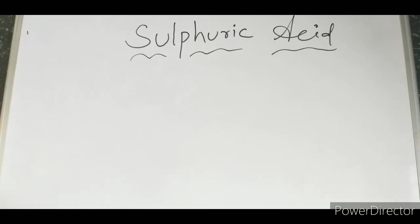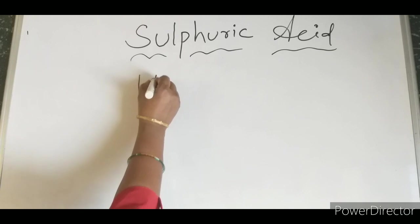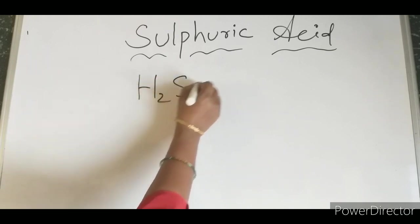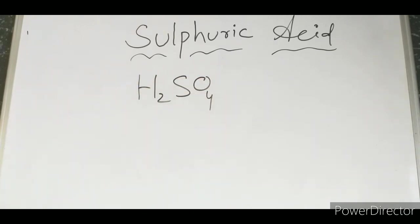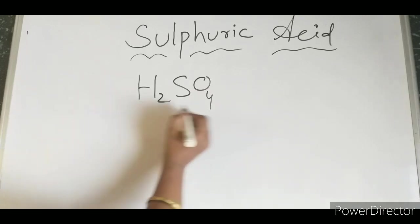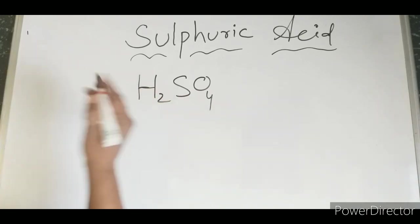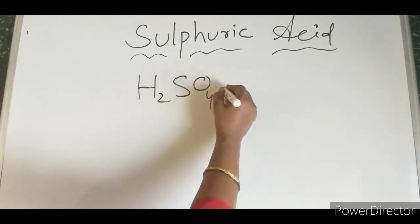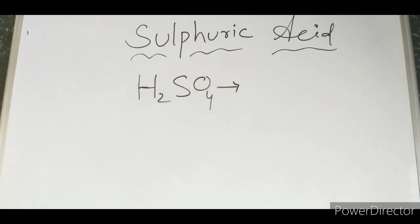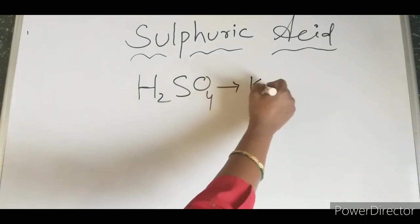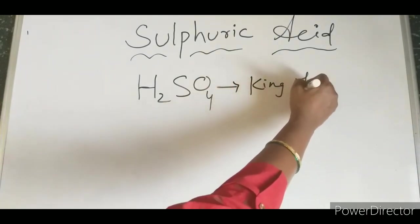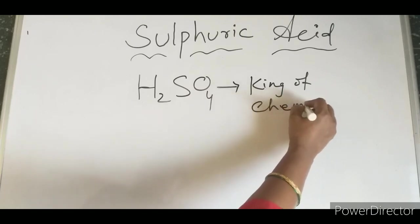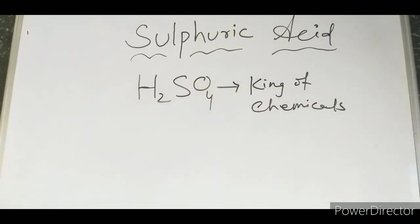Today we will discuss Sulfuric Acid. Sulfuric acid, H2SO4, is used to manufacture almost all compounds and chemicals. That is why it is known as the King of Chemicals.